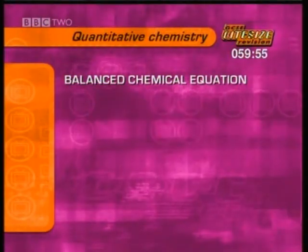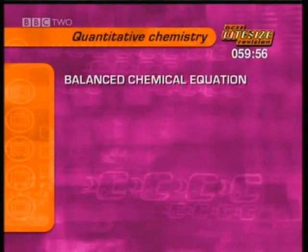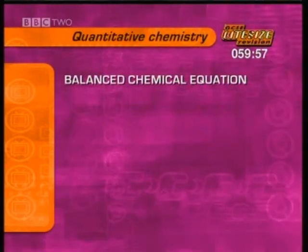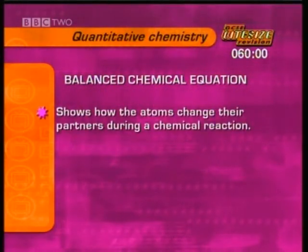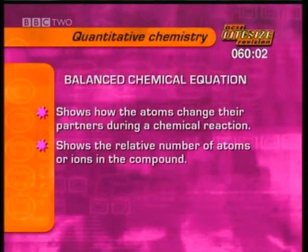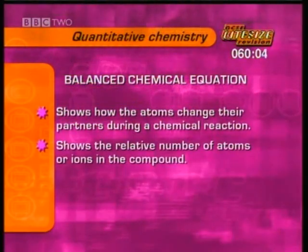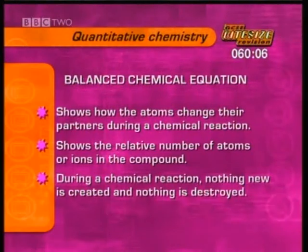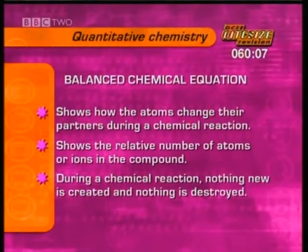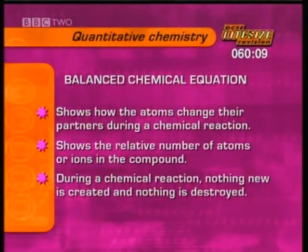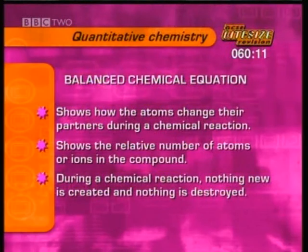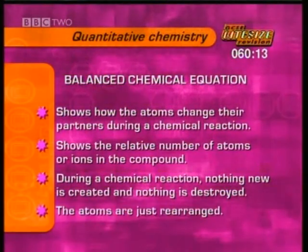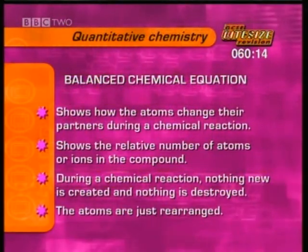A correct balanced chemical equation shows how atoms change their partners during a chemical reaction and the relative number of atoms or ions in the compound. One vital thing to remember is that during a chemical reaction, nothing new is created and nothing existing is destroyed — atoms are simply rearranged.